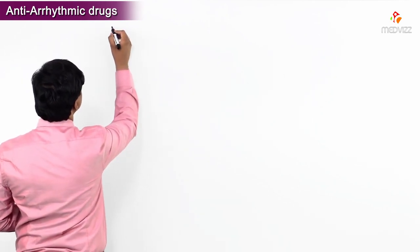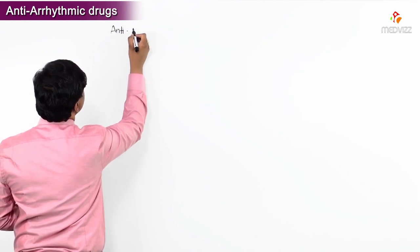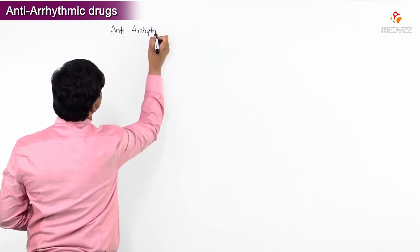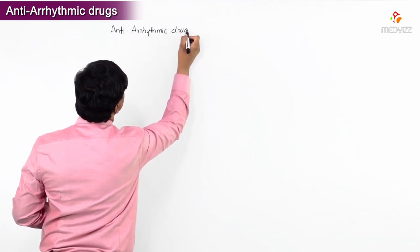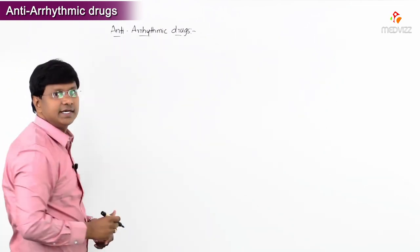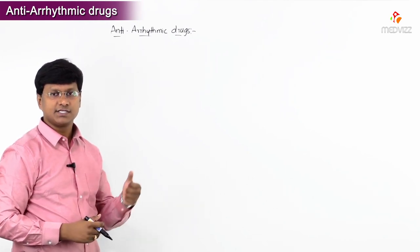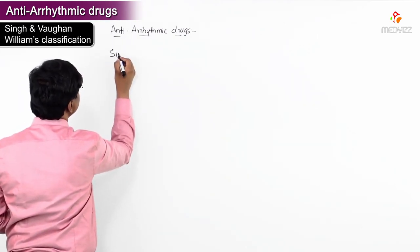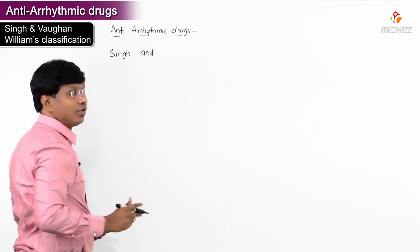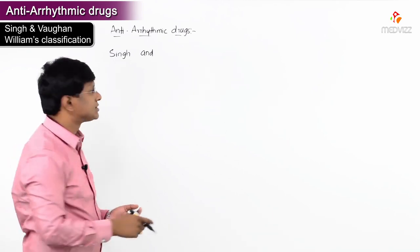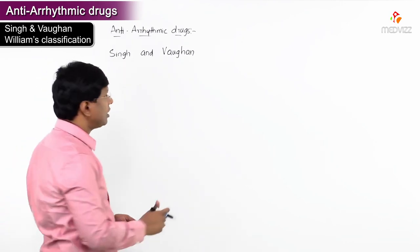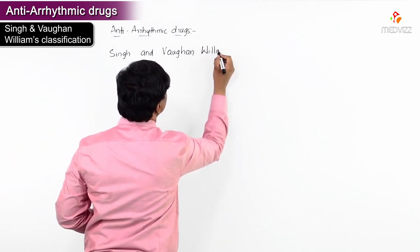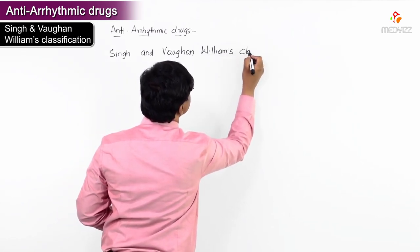After having discussed the cardiac action potential, let me discuss the anti-arrhythmic drugs. These anti-arrhythmic drugs are classified into five classes — Class 1, 2, 3, 4, and 5. The name of this classification is the Singh and Vaughan-Williams classification of anti-arrhythmic drugs.